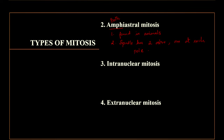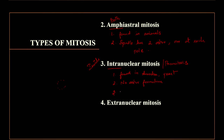Coming to intranuclear mitosis, also called promitosis — 'intra' means inside. In regular mitosis, the nuclear membrane disappears in prophase, but here the nuclear membrane is not going to disappear. It is found in amoeba and yeast. There won't be any aster formation, and the spindle fiber will be formed inside the nuclear membrane.